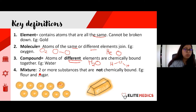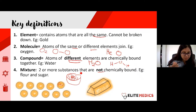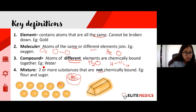The final definition is a mixture — two or more substances that are not chemically bound together. For example, if you're baking a cake and you add flour and sugar to a bowl, they look mixed up, but with a very fine sieve you could separate them, because they're not chemically bonded. Don't worry about writing these down — this session will be recorded.